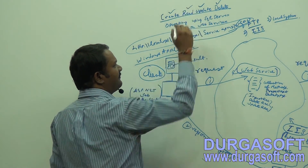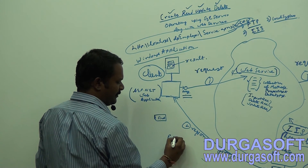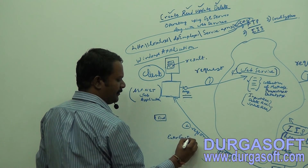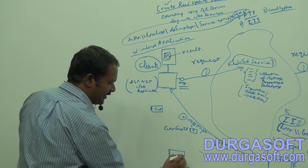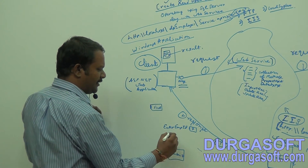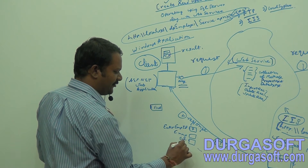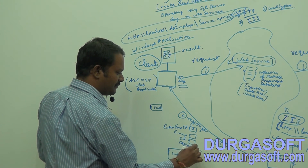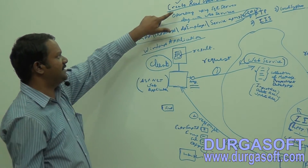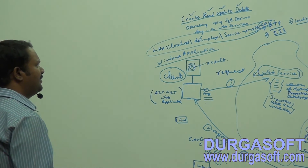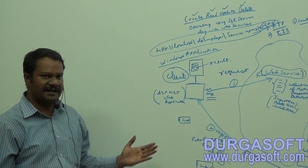Read operation means it is just a find button. If you want to find a record, you enter the Employee ID — like if you click on 7 and click on Submit — you will get the remaining details: whatever the name is, the salary, and the designation. You will get all the relevant details. That is called the find button, which is nothing but the read operation. We have discussed only these three operations: create, update, and delete. This is the basic hierarchy of how we design a web service.